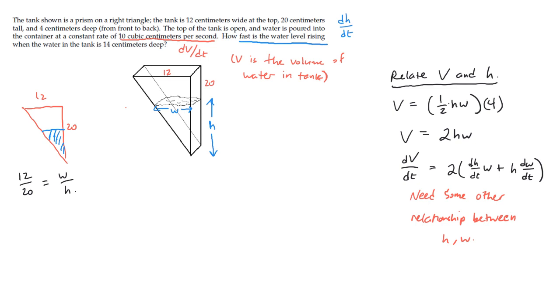We want to know what w is in terms of h. So I'm going to go ahead and multiply both sides by h and get w equals 12/20ths times h, which simplifies to 3/5ths times h.